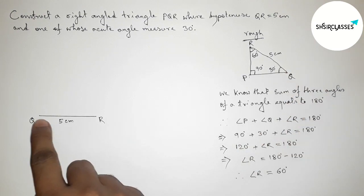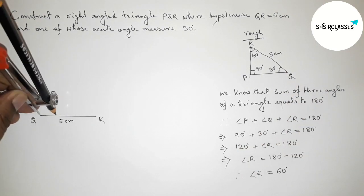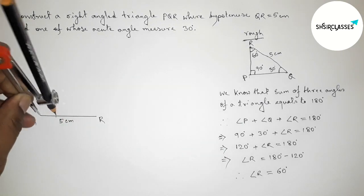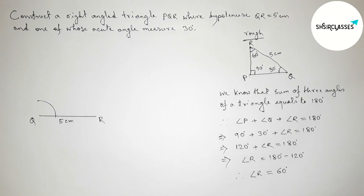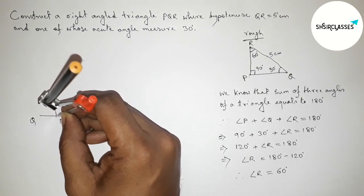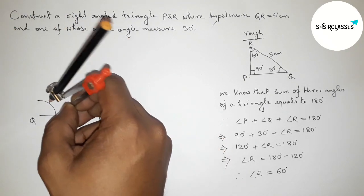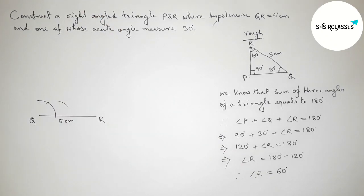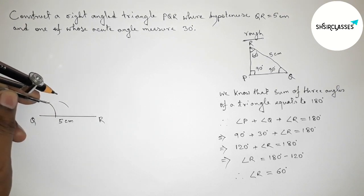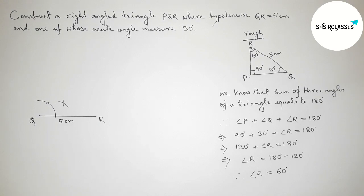Now we draw a 30 degree angle at point Q with the help of a compass. Putting the compass on point Q and taking any length, draw an arc. Then putting the compass here, taking the same length, cut here and draw another arc. Again putting the compass here, taking the same length, cut here to get a 30 degree angle.